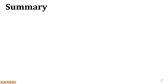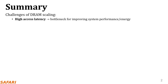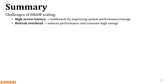DRAM offers high memory capacity at low cost. However, process technology scaling introduces three key challenges to DRAM. First, high DRAM access latency is a bottleneck for improving system performance and energy efficiency. Second, as the number of cells in a DRAM chip increases, DRAM refresh incurs more performance and energy overheads. Third, as process technology shrinks, DRAM cells become smaller and get closer to each other. The increasing interference between cells exposes DRAM to vulnerabilities such as rowhammer, which reduce DRAM reliability.